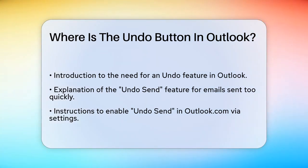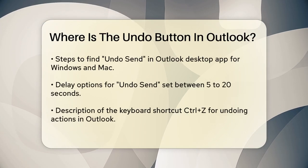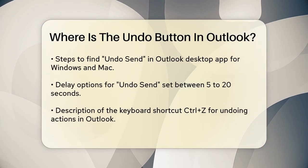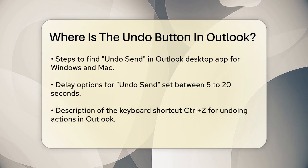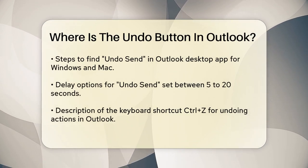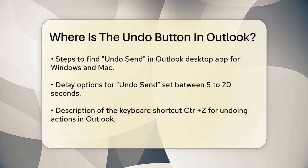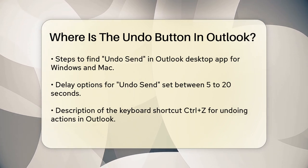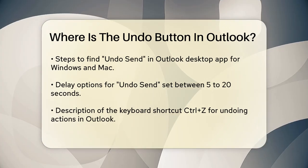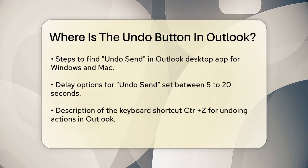To enable undo send in Outlook.com or the Outlook desktop app, you need to go into the settings. For Outlook.com, click the settings cog in the top right corner, then navigate to email settings and select compose and reply. Here you'll find the undo send option where you can set a delay of up to 10 seconds. Save your changes, and from then on you'll see an undo button at the bottom of the screen after you hit send.